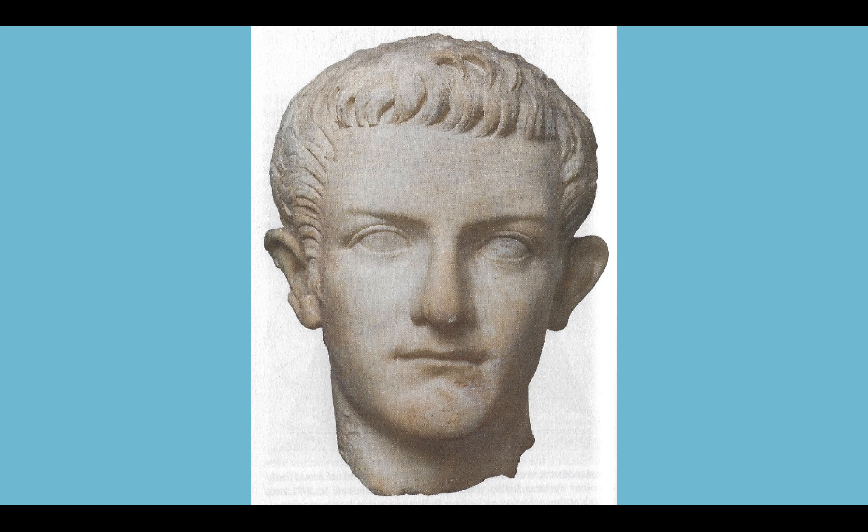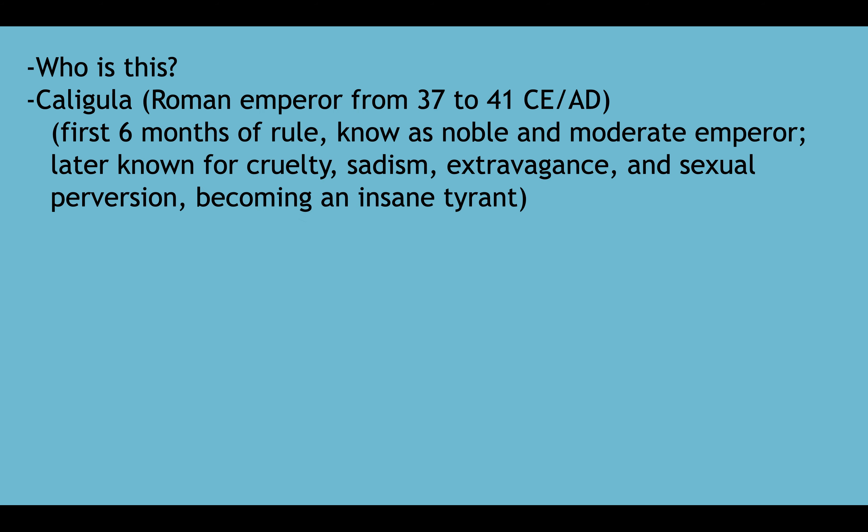Welcome to this mini lecture on color and contrast. Who is this in the following picture? It is Caligula, who was the Roman Emperor from the years 37 to 41 of the common era, also known as AD. He used to be known as being a nice, noble, modern emperor — later on, not so nice.